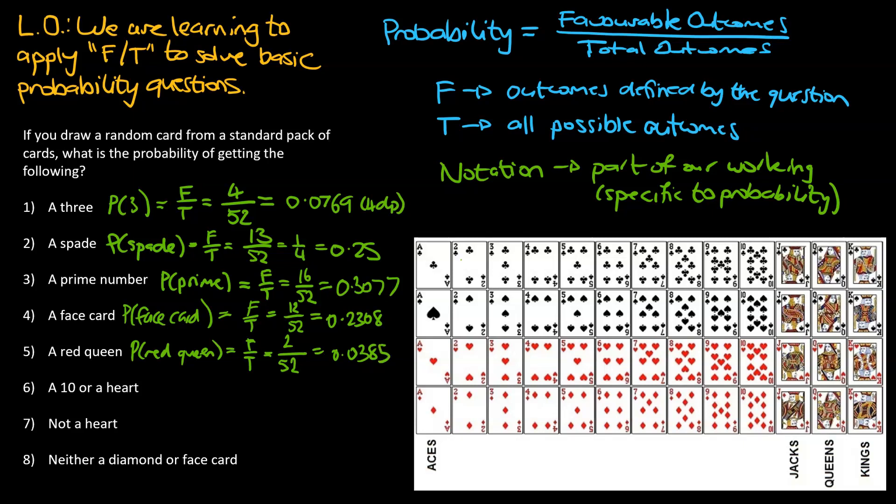The next one, so these ones are a bit trickier. What's the probability of getting a 10 or a heart? So the 10s sit along here. There's 4 of them. The hearts sit along here. There's 13 of them. But the trick is, do not add 14 and 13 together to get to 17, because what you'll be doing is you'll be double counting this 10 of hearts in the middle. So if you have a look, there are 13 hearts along the middle here. And then there are 3 extra 10s in addition to those. So 13 plus 3 actually gets us to 16.